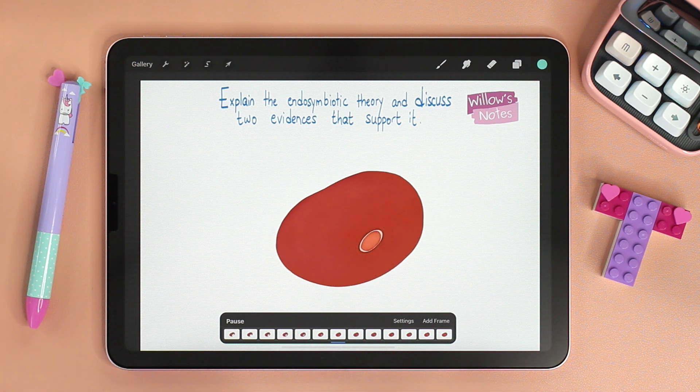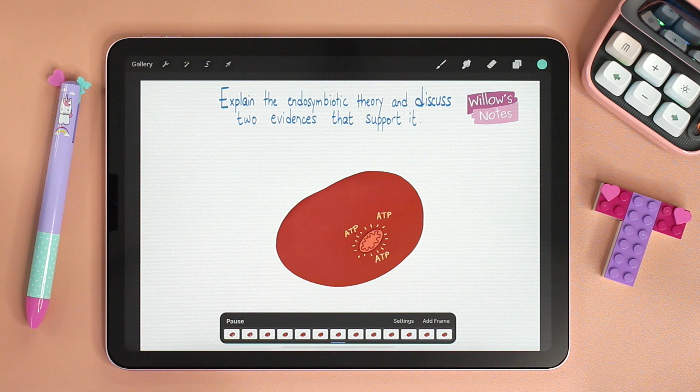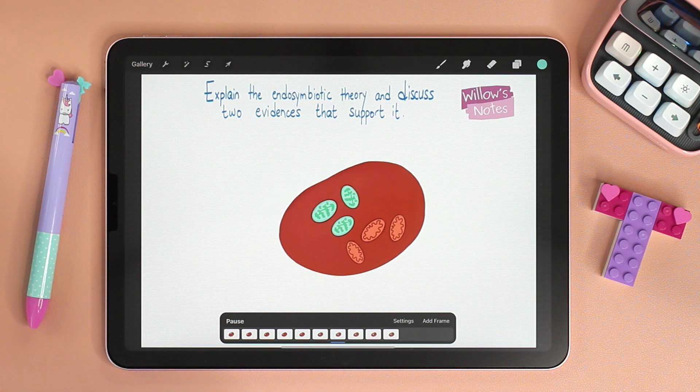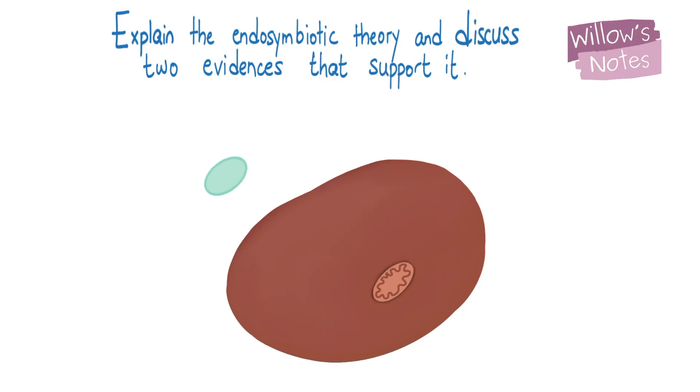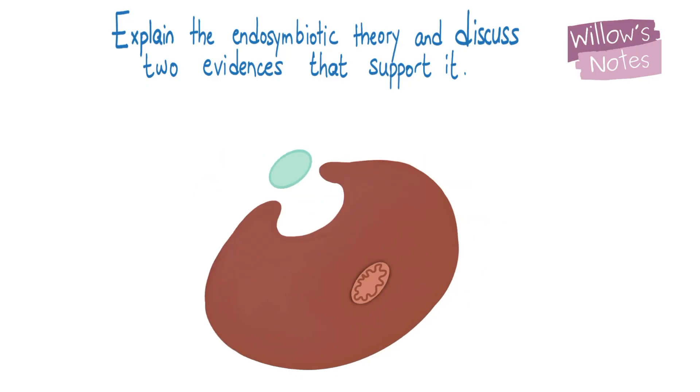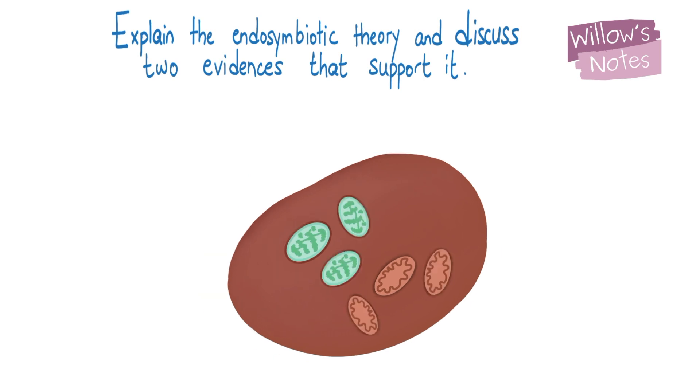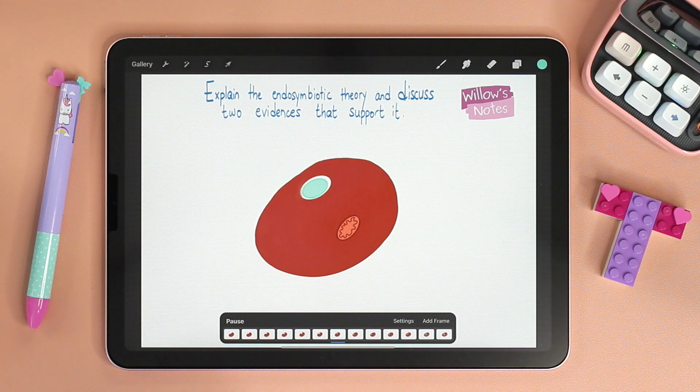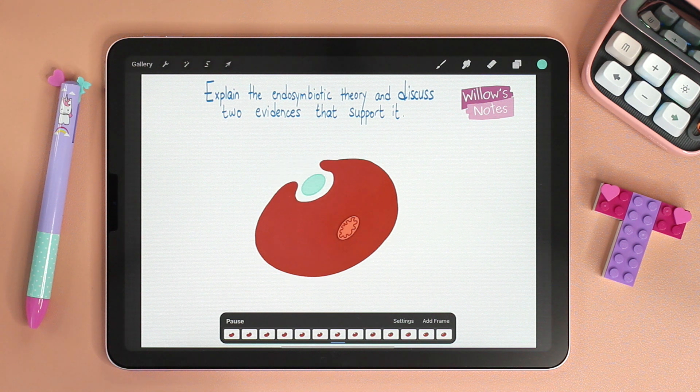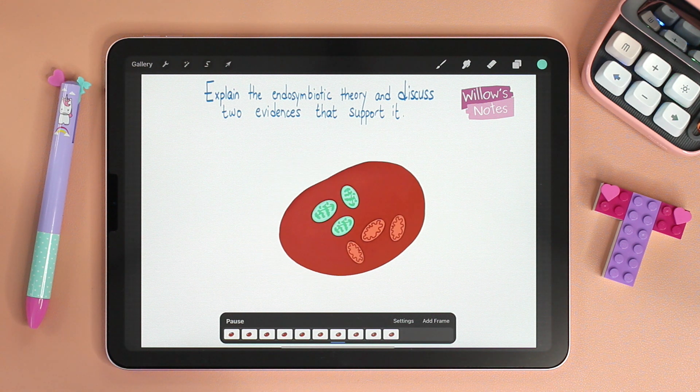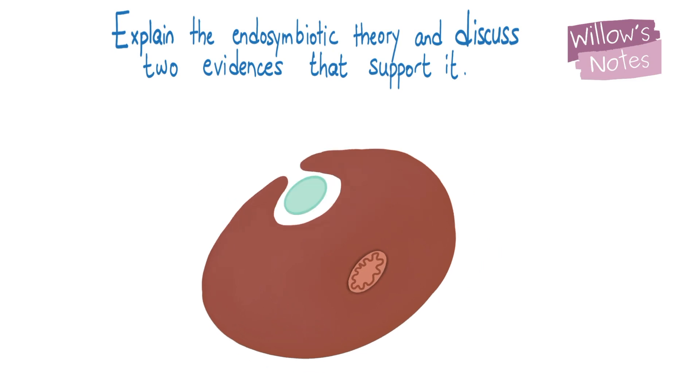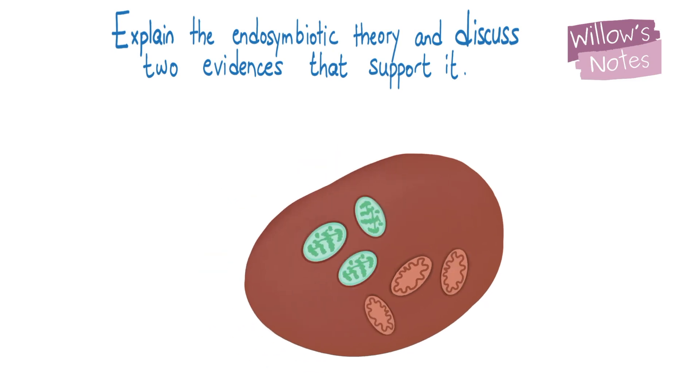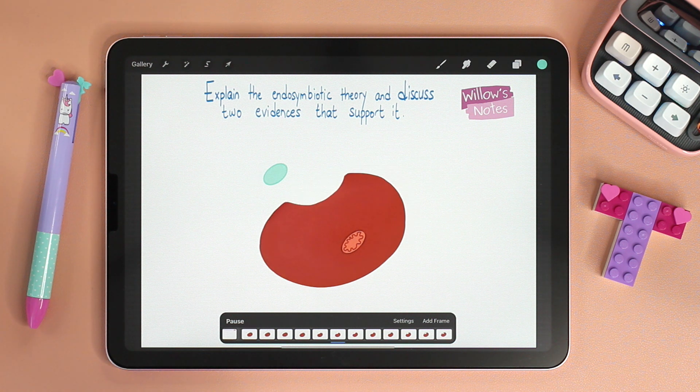What about chloroplasts? Similar to the phagocytosis of an aerobic bacterial cell, an autotrophic cell capable of undergoing photosynthesis was engulfed by the larger cell—most probably a cyanobacterium—that became an endosymbiont and over generations evolved to become an organelle in the larger cell, and what we now call chloroplast.